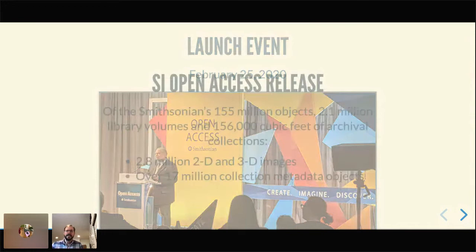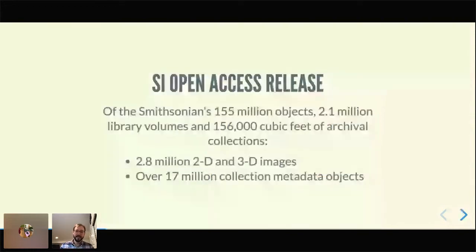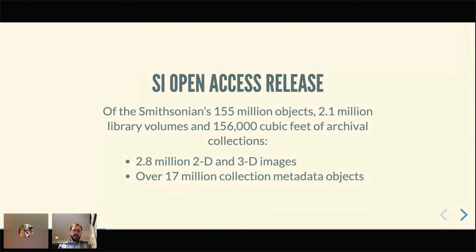What is in the open access release? Across the Smithsonian — and this is just an estimate because we can't really count it all — there are 155 million objects, 2.1 million library volumes, and a ton of feet of archival collection. Within the open access release itself, there are 2.8 million mostly 2D images, plus 3D scans. And most useful to a person like me, we've made all of the metadata records for all digitized objects available — over 17 million at last count.